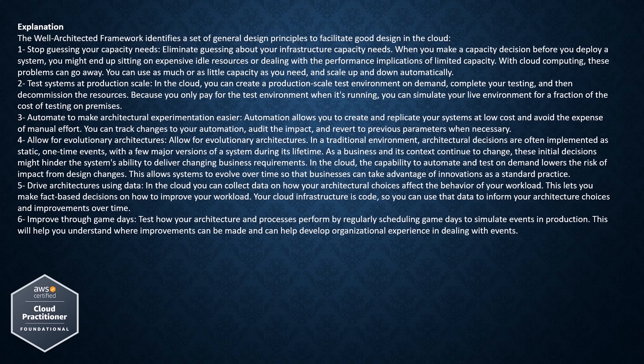Principle 2: Test systems at production scale. In the cloud, you can create a production-scale test environment on demand, complete your testing, and then decommission the resources. Because you only pay for the test environment when it's running, you can simulate your live environment for a fraction of the cost of testing on-premises. Principle 3: Automate to make architectural experimentation easier. Automation allows you to create and replicate your systems at low cost and avoid the expense of manual effort. You can track changes to your automation, audit the impact, and revert to previous parameters when necessary.